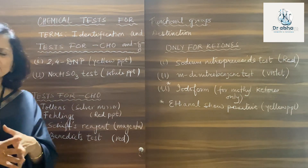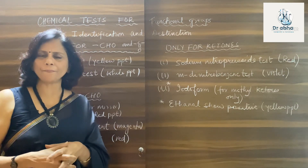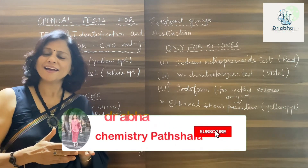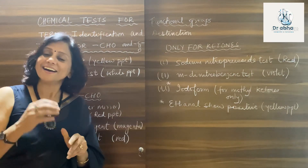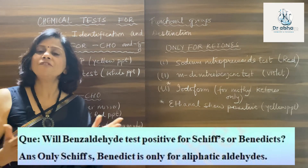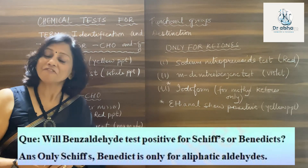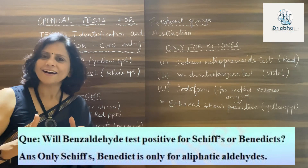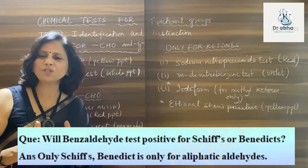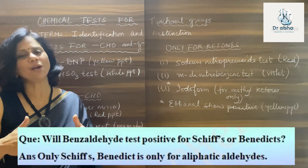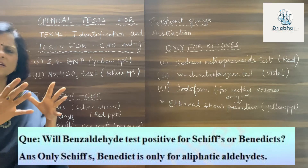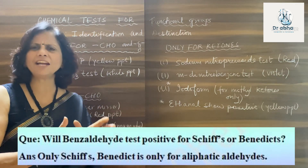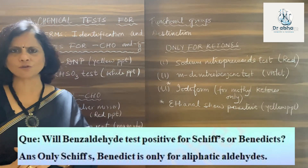Benedict's test is given only by aliphatic aldehydes, but also by certain specific ketones — ketones which have an alpha-hydroxy group. A good example is fructose, which has a hydroxyl at the position next to the ketone. Such compounds also show Benedict's test positive. So to be precise, this test is positive for aldehydes but also positive for certain classes of ketones.